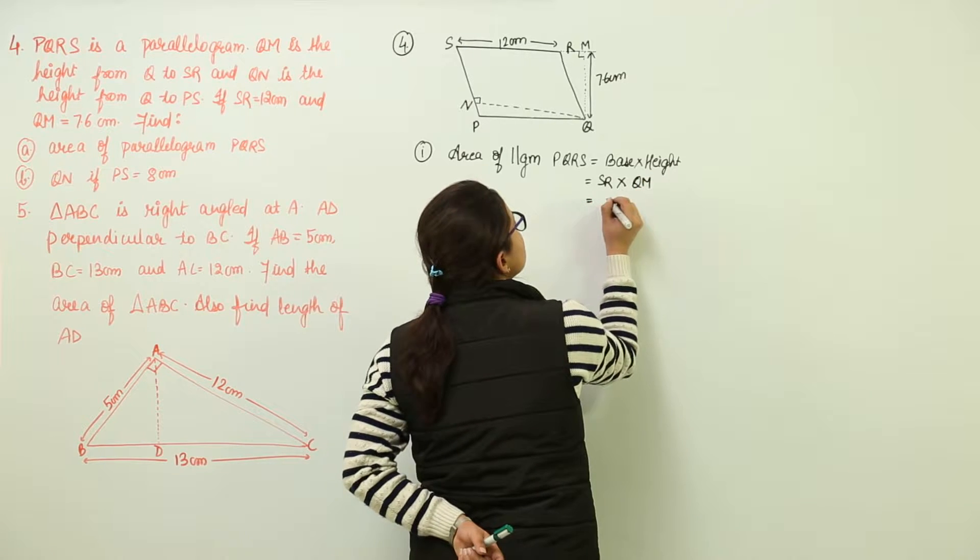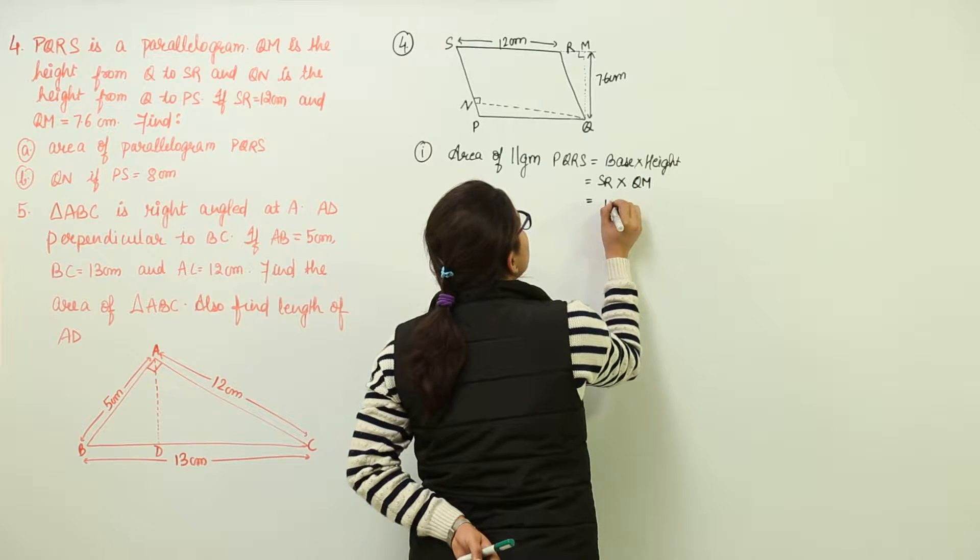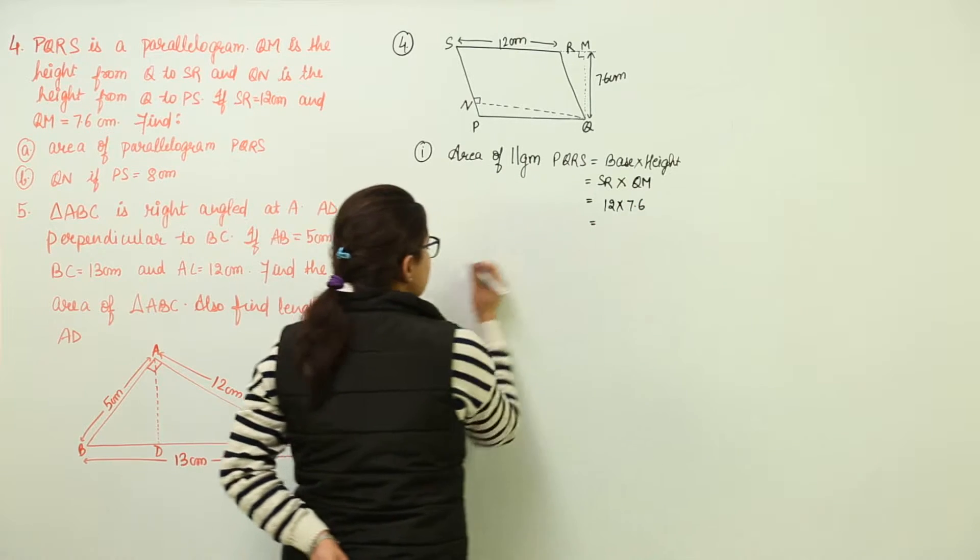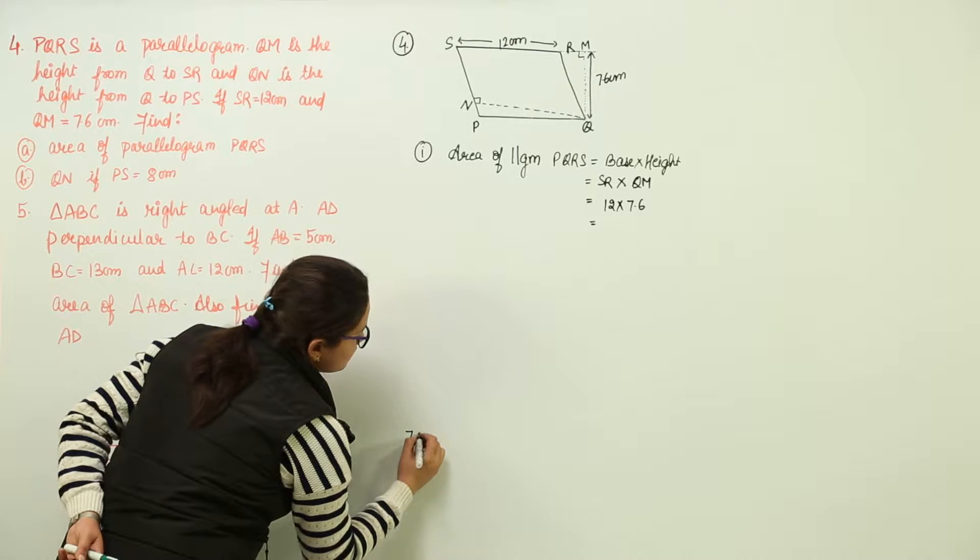Therefore, we are going to get the area as 12 into 7.6. That is going to give us some value. And we will do it over here.